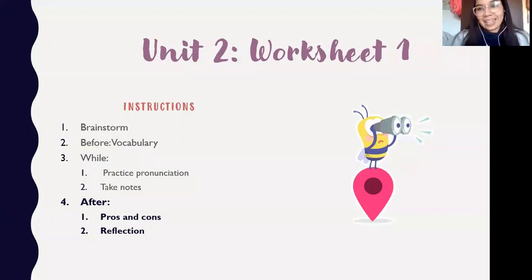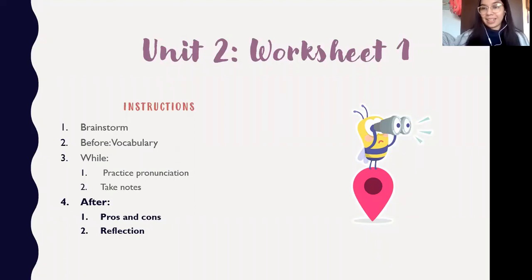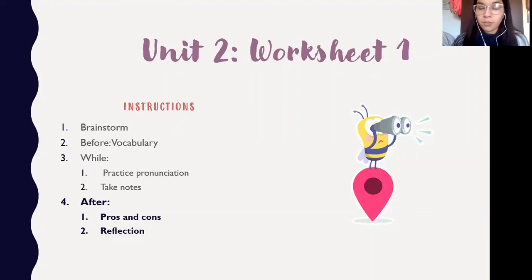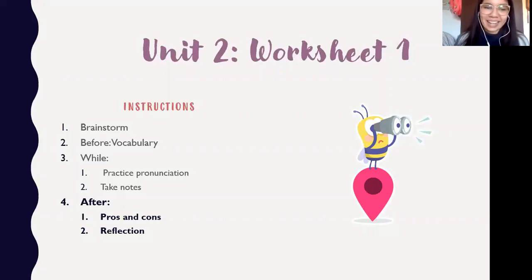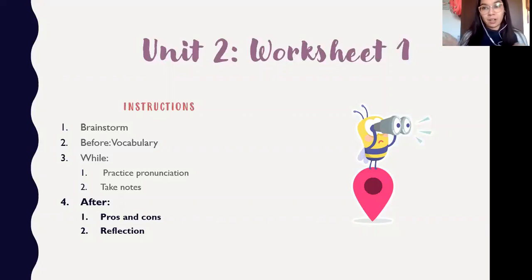In the worksheet, the first thing you'll do is brainstorming — una lluvia de ideas — about a photo that will be there, to start connecting with the topic you'll discuss later. Before watching the video, you have to do a vocabulary exercise where there are key words you need to look up if you don't know them. Then, while you watch the video, you have to practice your pronunciation, take notes, and identify the pros and cons of veganism that appear in the video.